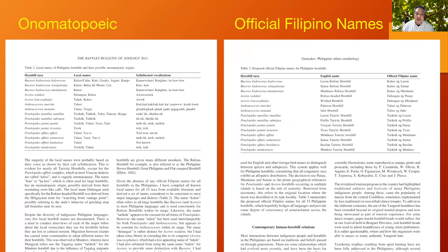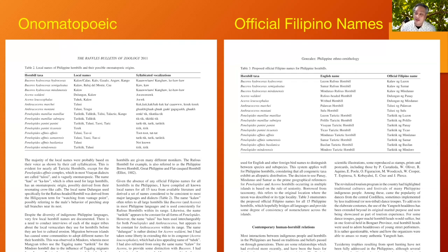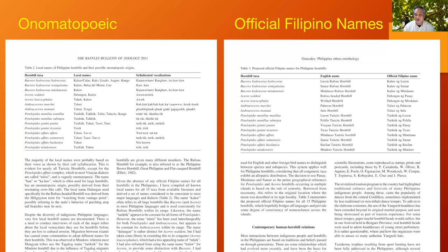A lot of names are onomatopoeic — based on what people hear from the call. The bird is named Tariktik because its call is TIK-TIK-TIK-TIK-TIK! Similarly, the Aetas call the Kalaw 'Kaaw' because the call sounds like that. So it's all onomatopoeic. Here are some local names and the syllabicated vocalizations associated with hornbills. They vary across many languages, dialects, and indigenous peoples.